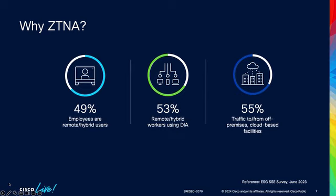We now have lots of remote users. Remote work is a lot more common. We have a spread set of employees and contractors — sometimes in the office, sometimes remote. Applications also significantly changed. It used to be we had all applications in a couple of data centers. Now we have them in data centers, co-location facilities, infrastructure as a service providers — AWS, GCP, Azure. We now have a much more distributed application set.